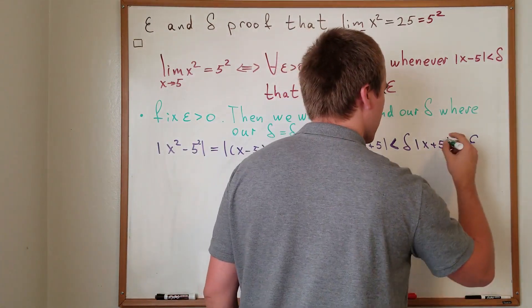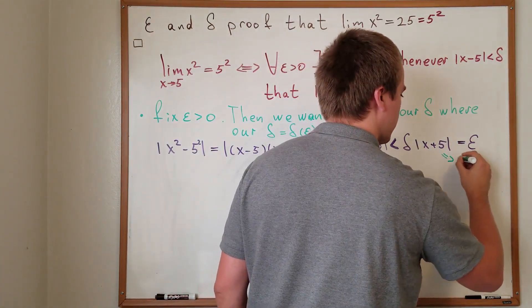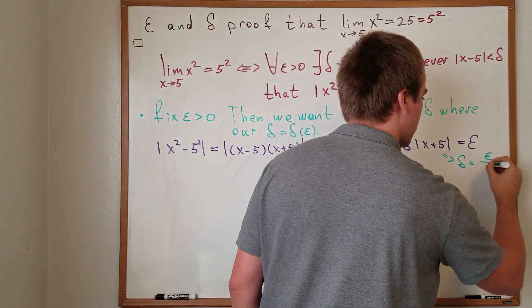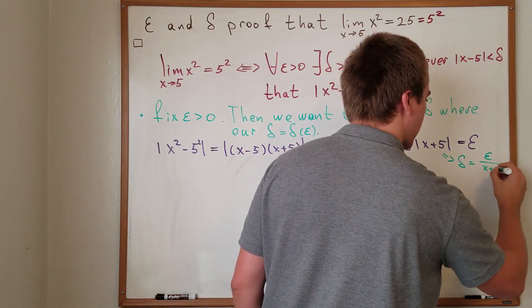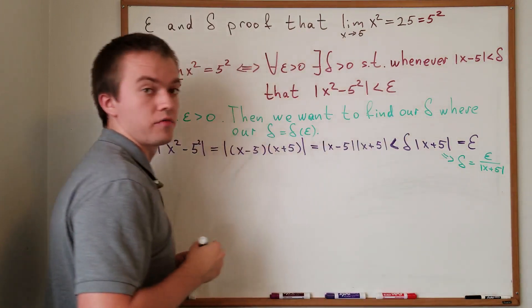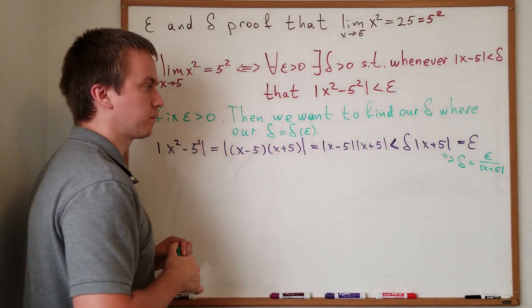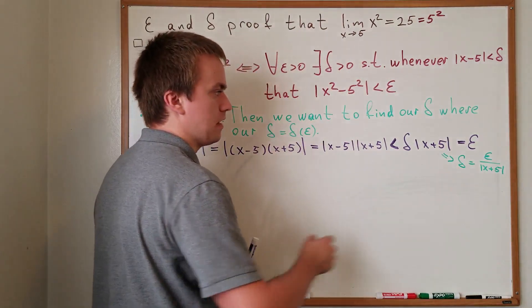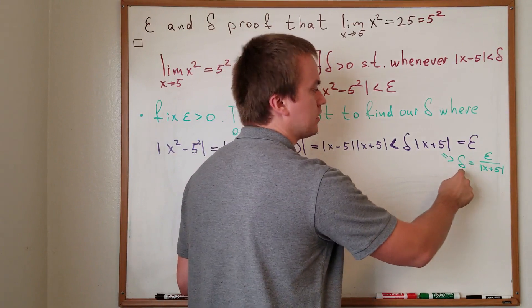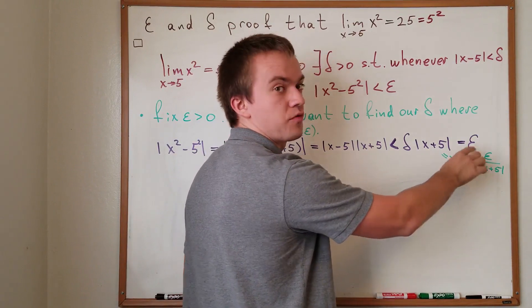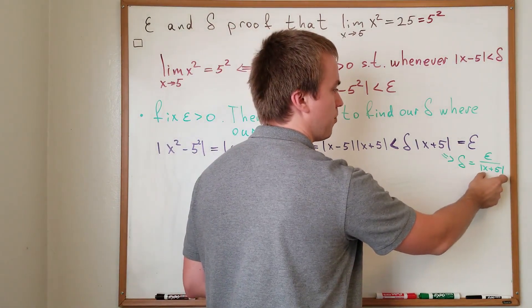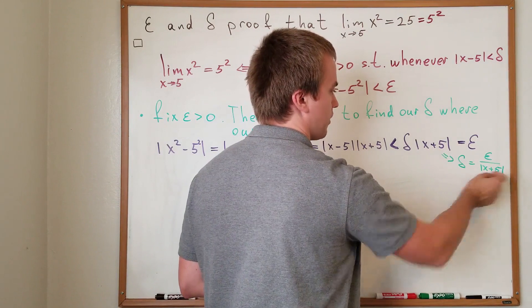Because from here I can write my delta equals epsilon divided by the absolute value of x plus five. But this doesn't work because I want my delta to be in terms of epsilon purely — I need to get rid of the x plus five part.